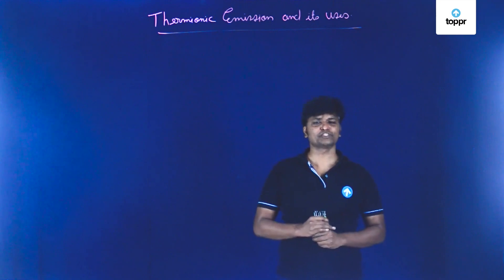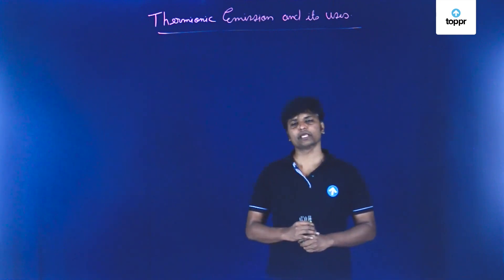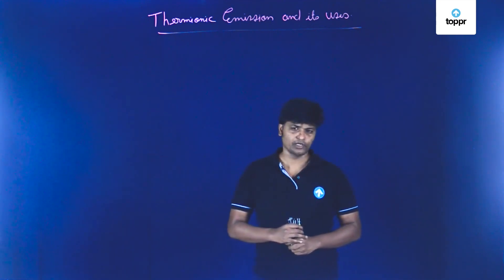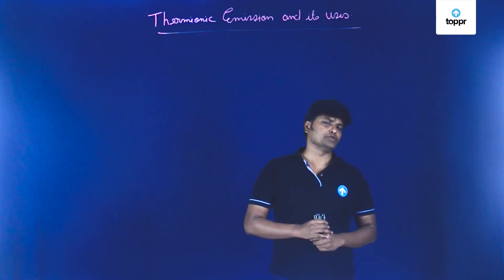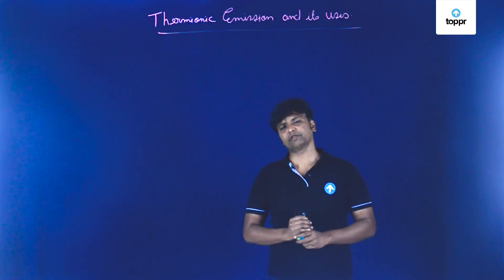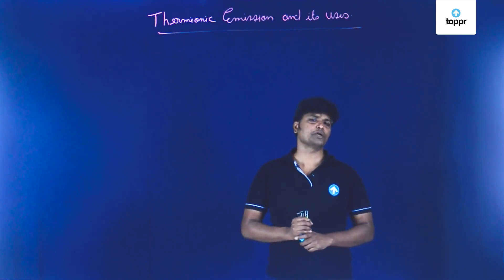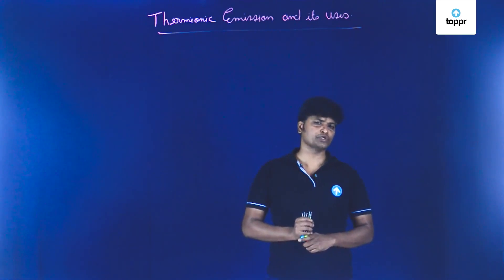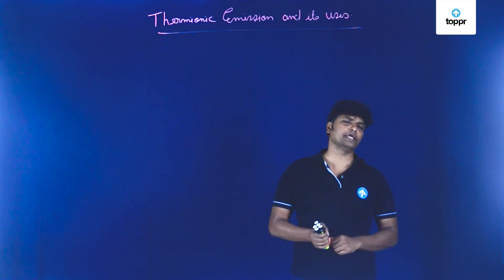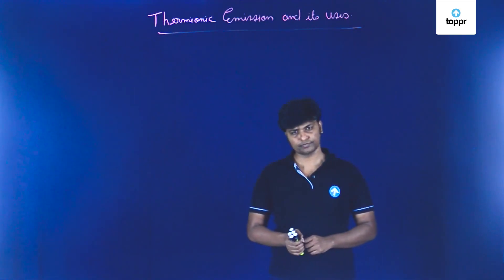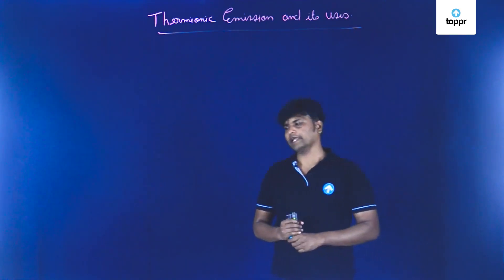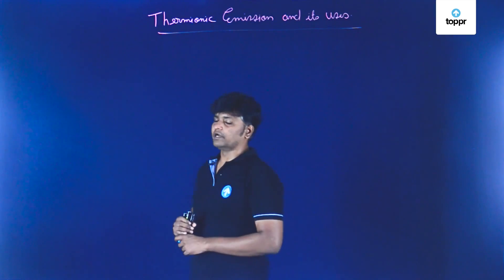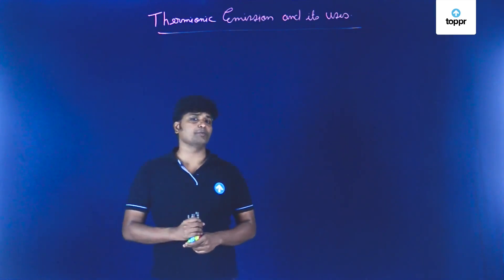Hello friends, in this session we are going to talk about thermionic emission and its uses. Thermionic emission is a type of electronic emission. In the previous session you might have understood what electronic emission is — it is nothing but the emission of electrons from any metal surface. Now the point is why and when do these electrons come out of the metal surface?